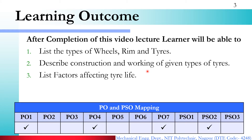This is the learning outcome of this video. If we talk about PO and PSO mapping, we have PO1, which means Basic and Discipline Knowledge. We are using wheels, and the wheel is a basic component of mechanical engineering. We use wheels in many different places. How is wheel construction done in automobiles, and why is this construction done? We will discuss all these things in this video lecture.